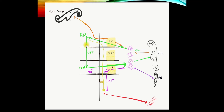The inferior olivary nucleus is really a displaced cerebellar nucleus — it communicates with the cerebellum through the inferior cerebellar peduncle, and then this goes back out to the red nucleus. So we have a triangle: red nucleus, inferior olivary nucleus, cerebellum, and back to the red nucleus. That's why the red nucleus is important in terms of cerebellar function.